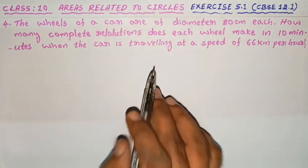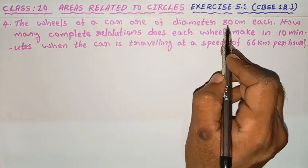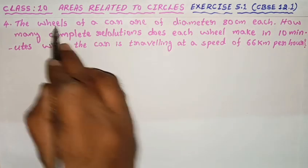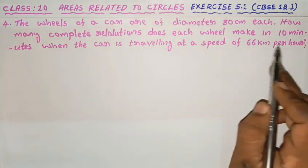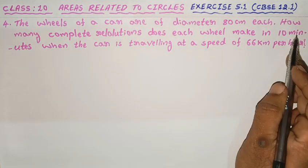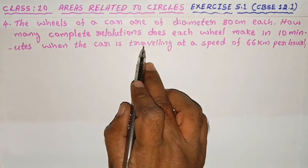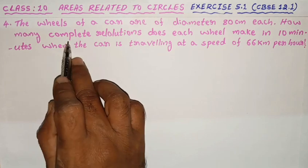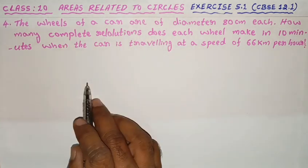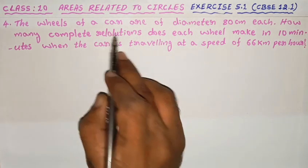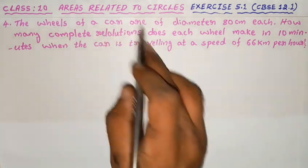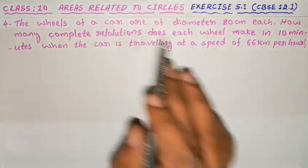The question gives us: diameter is 80 cm, wheel speed is 66 km per hour, travel time is 10 minutes, and we need to find the complete revolutions. The revolutions are full — the wheel is full.